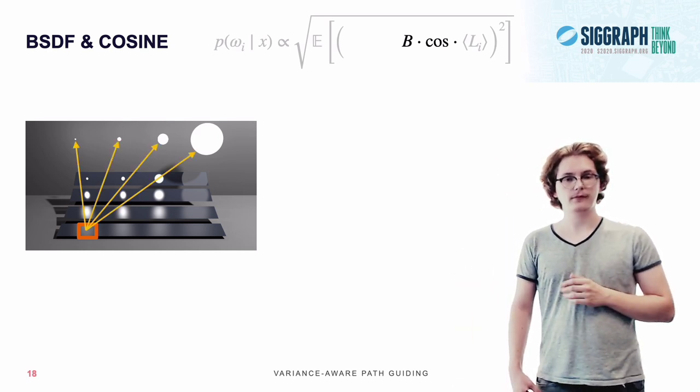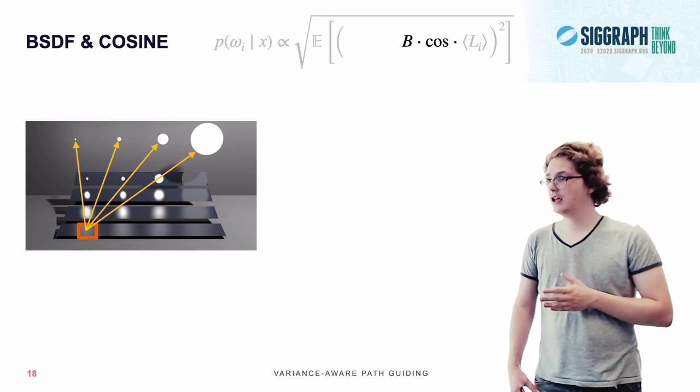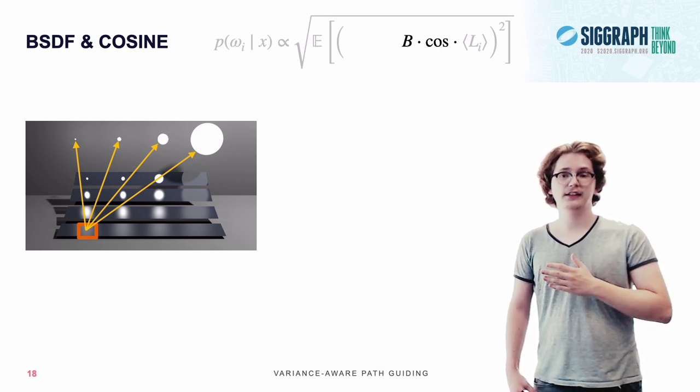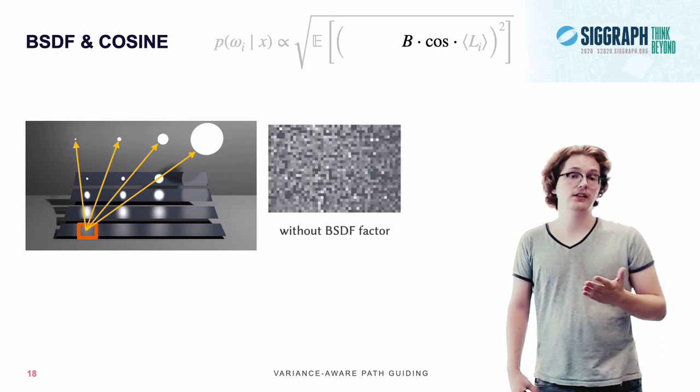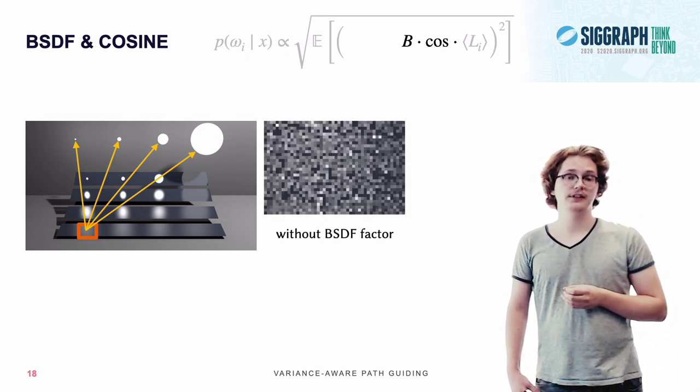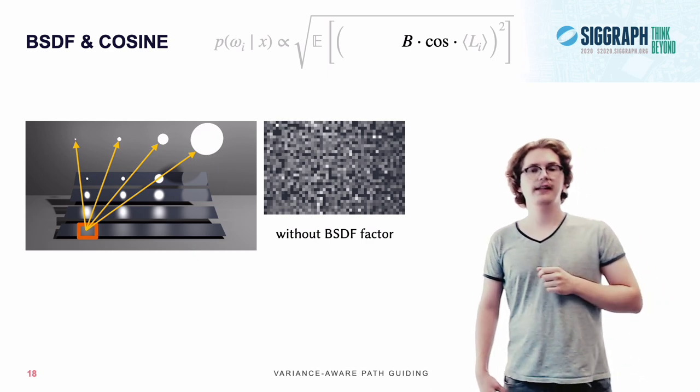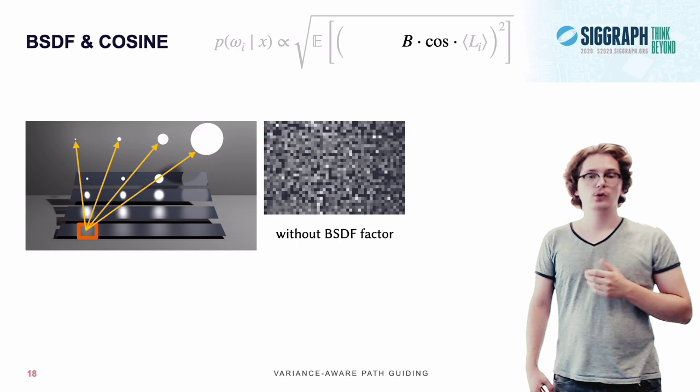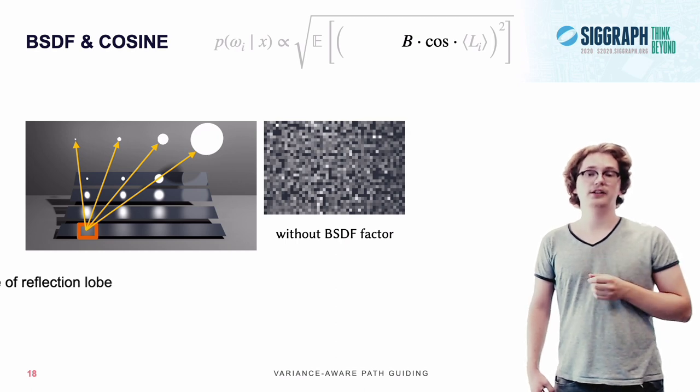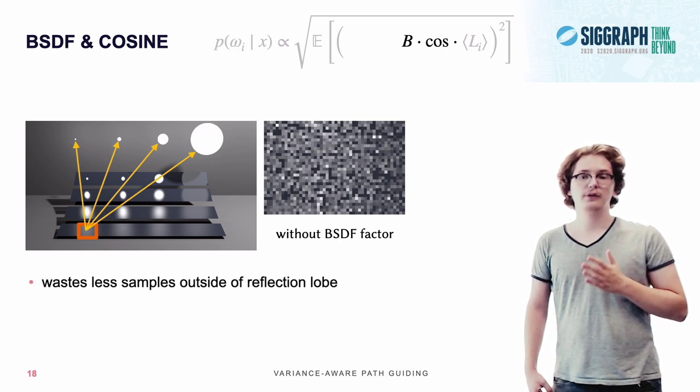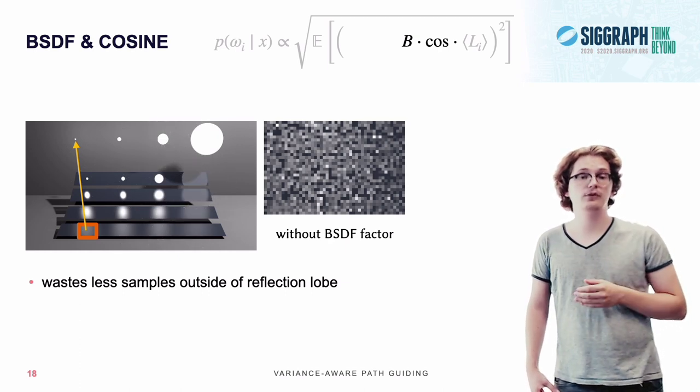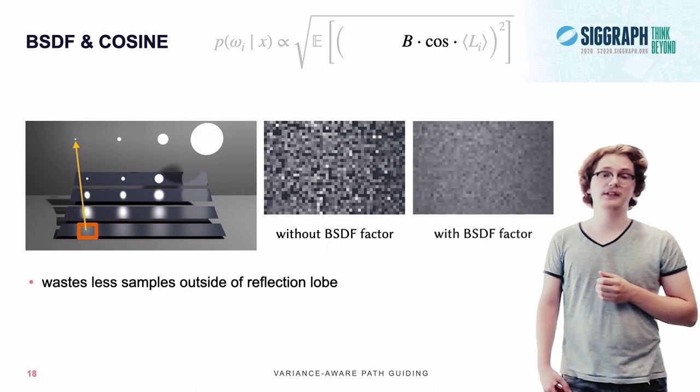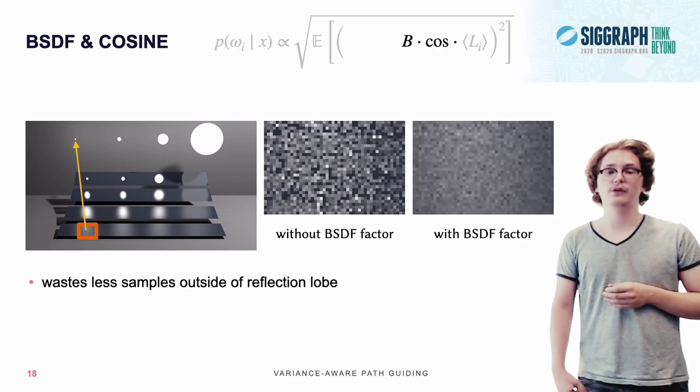However, this creates a problem, because the glossy surface actually only mostly reflects the light on the left side, which means the other samples will essentially also just waste time and we are left with a render that's very noisy. Now, by multiplying with BSDF and cosine, we're actually taking the average reflection mode into account, which means we're focusing our guiding only on the light sources which are actually being reflected well, leaving us with an image that's way smoother and faster to converge.